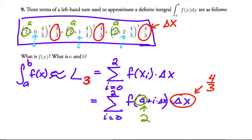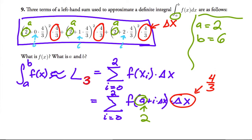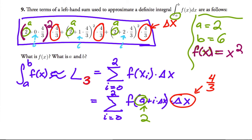We know a equals 2 — you can see it directly in the sum. With a equal to 2 and delta x equal to four-thirds and n equal to 3, delta x equals b minus a over n gives us b equal to 6. For f of x, look at the structure of the sum: you're squaring what you plug in — a plus i times delta x, or 2 plus i times four-thirds. So f of x equals x squared.